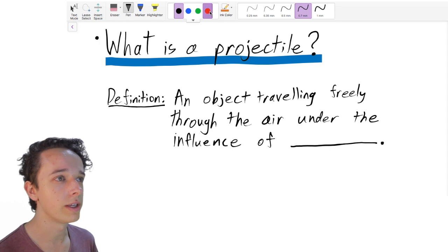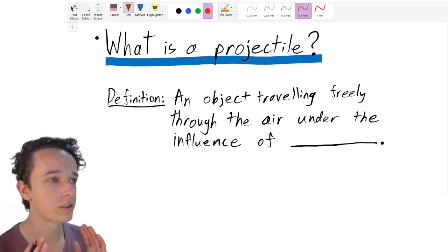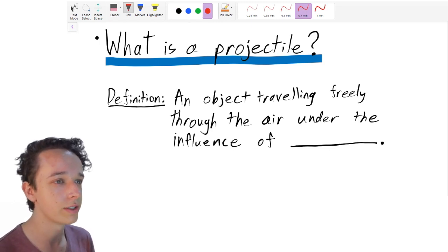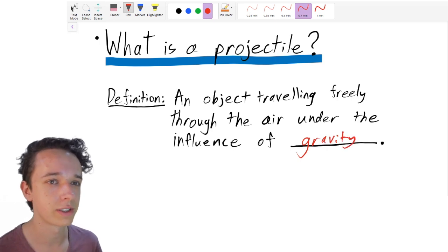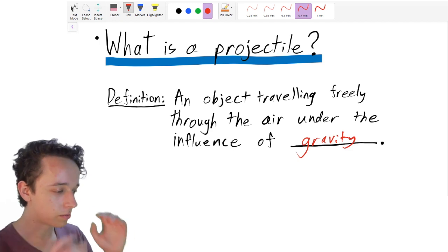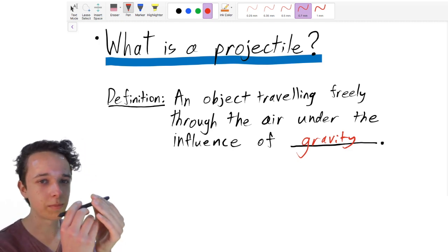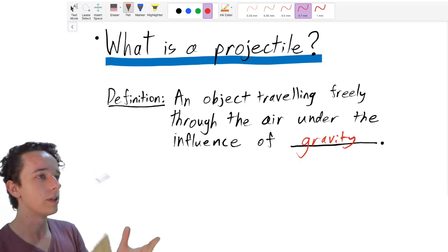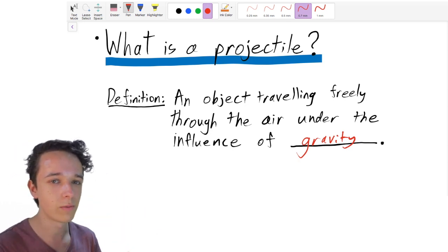Okay, so first up, what is a projectile? Well, for the purposes of HSC physics, a projectile is an object traveling freely through the air under the influence of, can you guess, gravity. So under the influence of gravity. Gravity is the only force acting on a projectile. So projectile is something that you, it's like an object, say this pen, that you launch, you throw in the air, it travels freely with the only force being gravity that is acting upon the object.